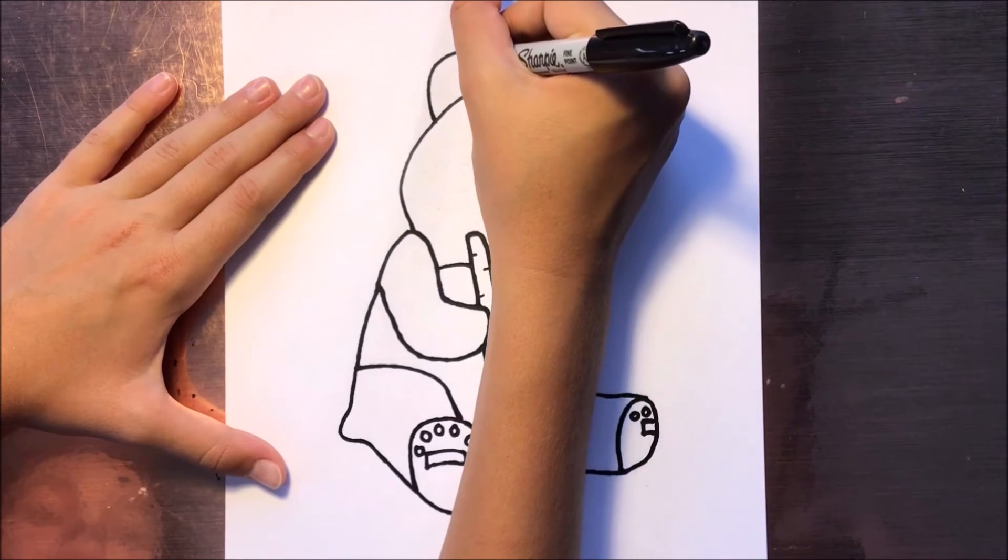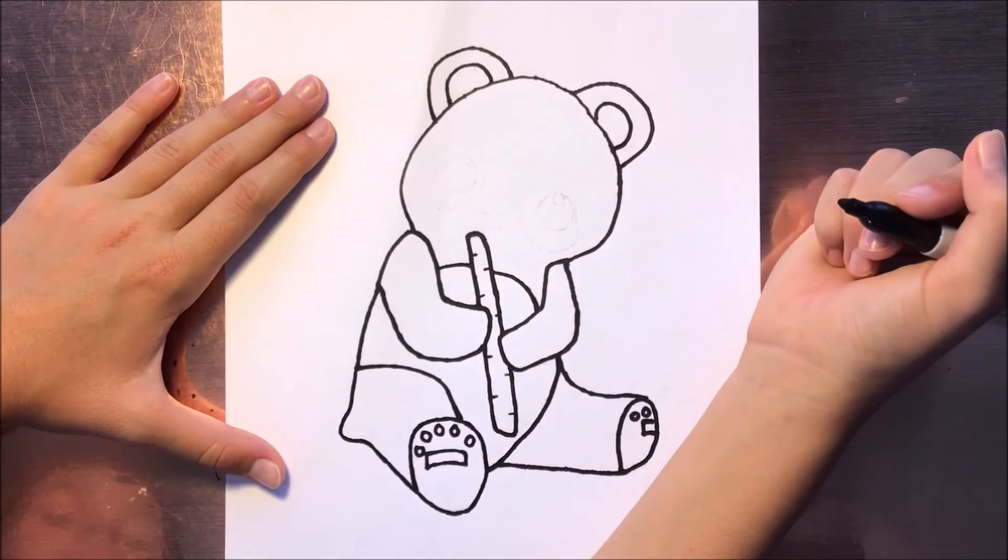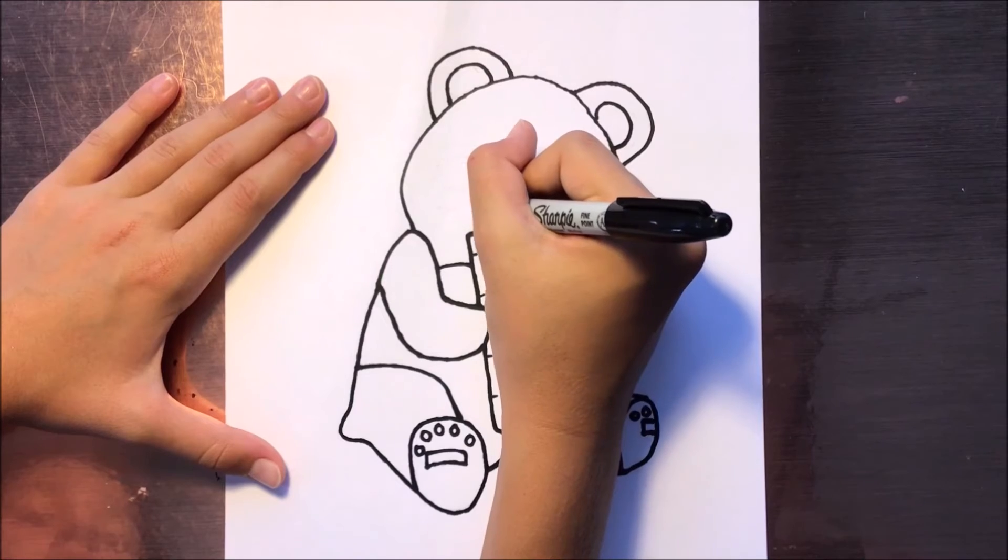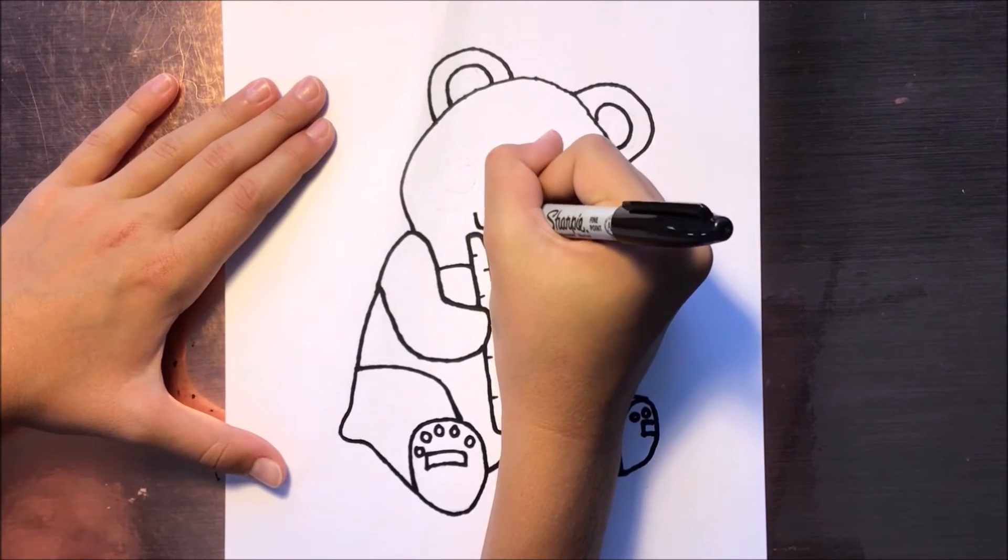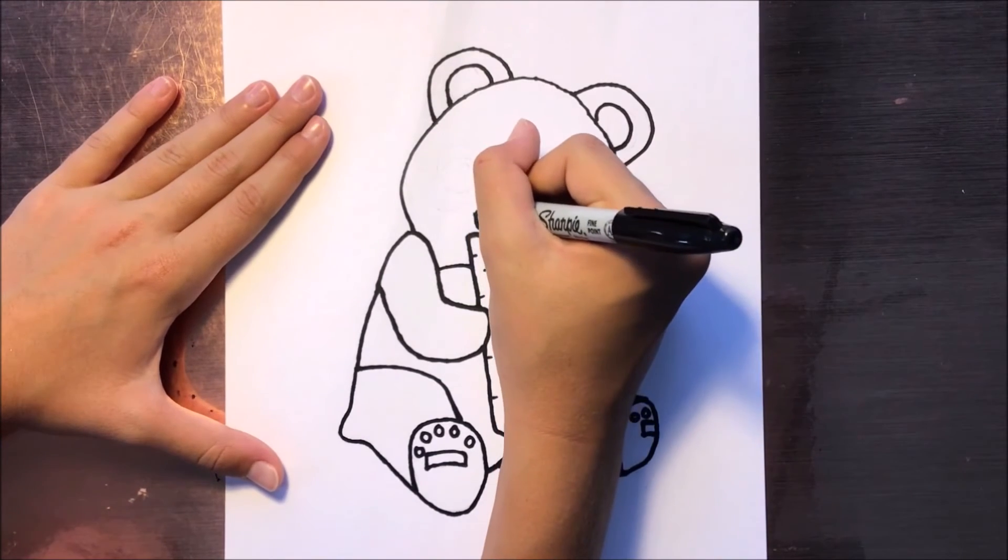Do the same on the other side. Now his nose. It's going to be like a circle, but you're going to point it at the end.